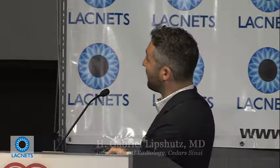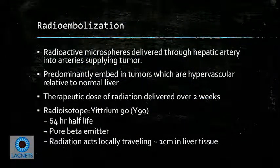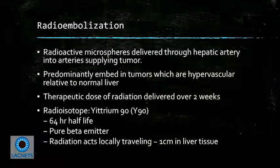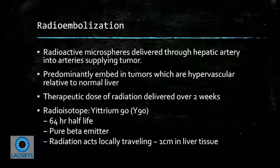Moving on to radioembolization — it's a similar procedure, accessing the femoral artery with catheters into the hepatic artery. But instead of injecting spheres or chemoembolic material, we inject radioactive microspheres. The tumors are hypervascular and suck up the majority of these radioactive beads. The beads decay over a couple of weeks and irradiate the surrounding tumor. The radioisotope we use is Yttrium-90, which has a 64-hour half-life. It's a pure beta emitter, meaning radioactivity only travels approximately 11 millimeters in tissue, so you get a local treatment response and the radiation stays within the liver.